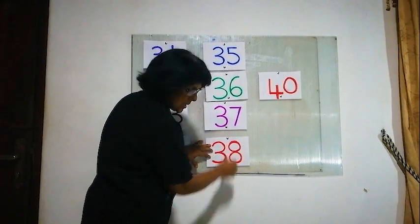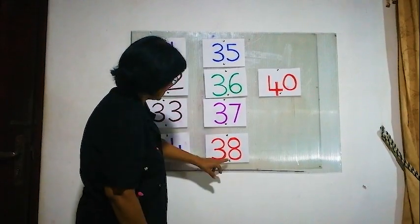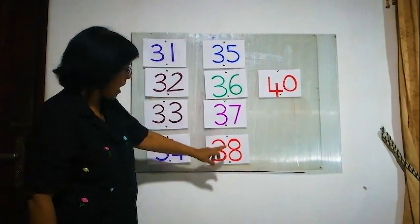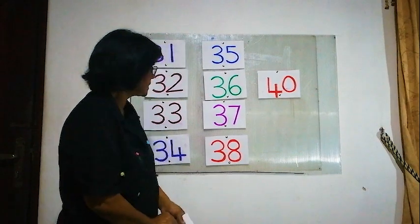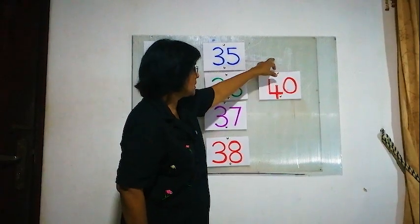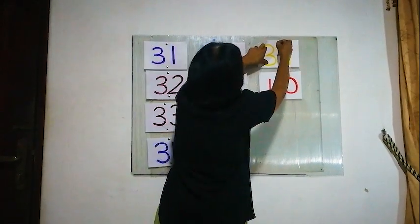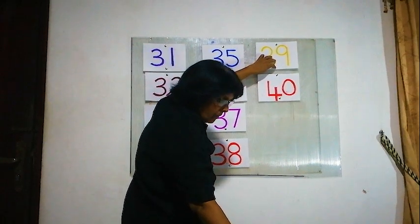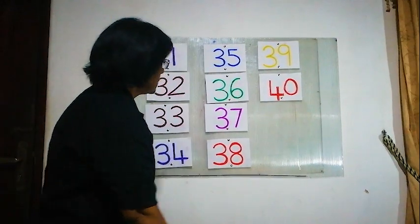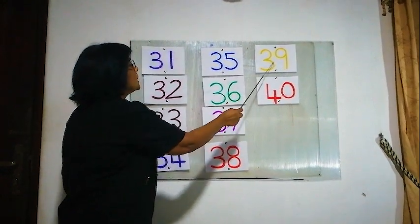This is 38 — this is correct. 37, 38. After 38, what is the next number? What is this number? Before 40, what is the number missing here? 39. 39, 40. Before 40, what is the number? 39. After 38, 39. Before 40, 39.